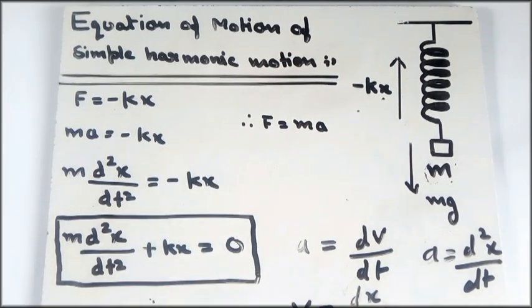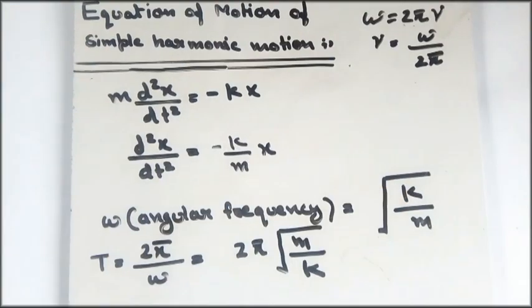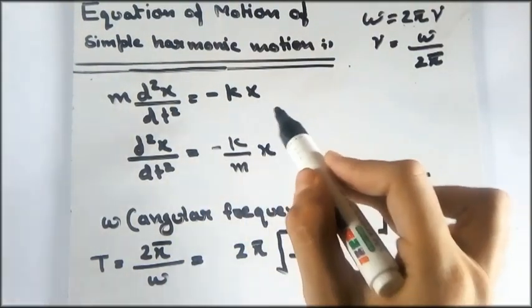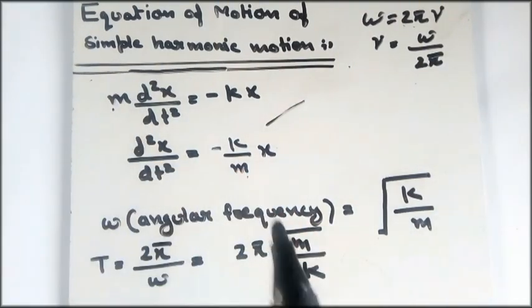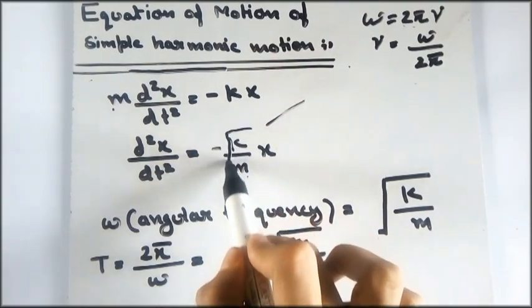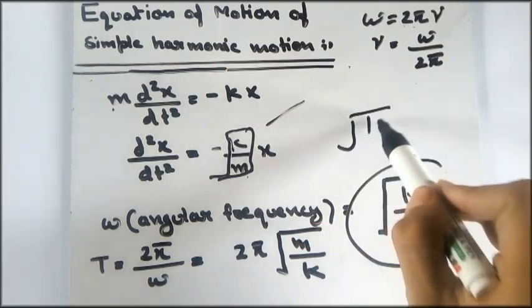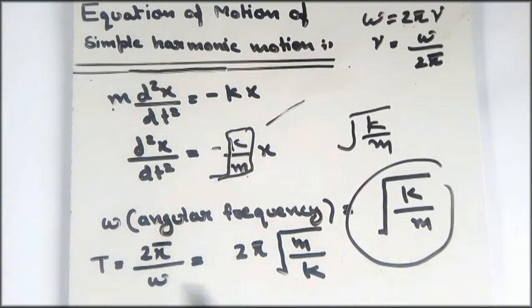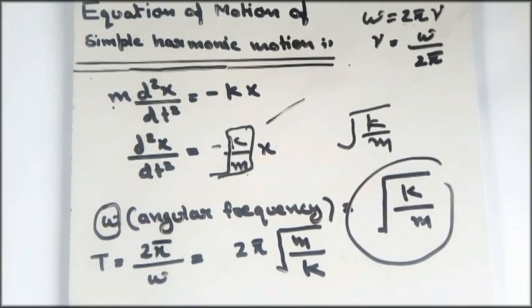From the equation of motion of simple harmonic motion we can extract very interesting quantities like angular frequency and time period. Rewriting the equation, we can identify k/m as a key ratio. Taking the square root of k/m gives the angular frequency ω = √(k/m) of the system oscillating with simple harmonic motion.